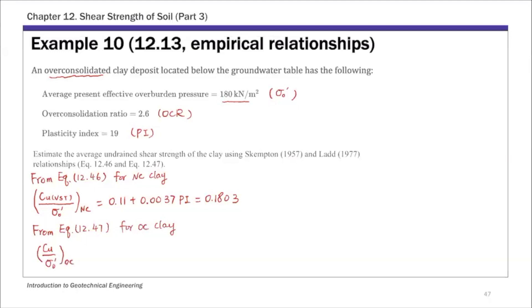And then that's times Cu over sigma nought prime for NC clay. And that Cu over sigma prime for normally consolidated clay is what we just calculated.